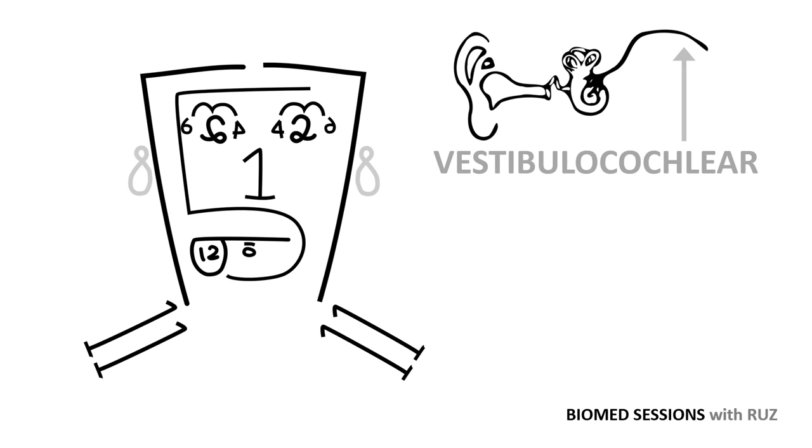The vestibulocochlear nerve, cranial nerve 8, is a sensory nerve which gets its name from the structures in the inner ear which it innervates: the cochlea, which is involved in hearing, and the vestibule, which is involved in balance. Hence, the vestibulocochlear nerve aids in these functions.